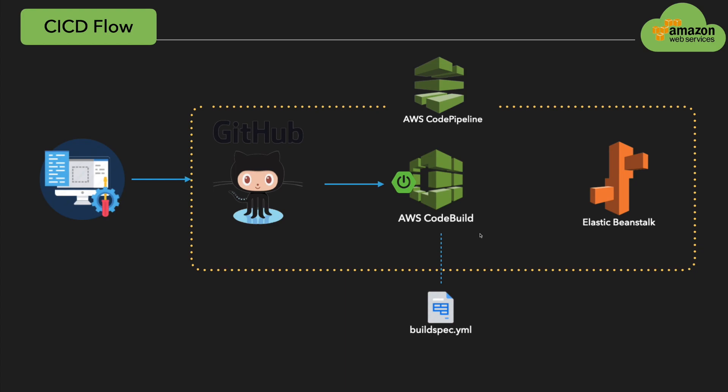Once we make a change to our code and push it to the GitHub repository, automatically the CodeBuild service will pull the code from GitHub, build the artifact, test it, and deploy the application on our Elastic Beanstalk. That's the complete process - this is how the entire flow works. So let's get our hands dirty.